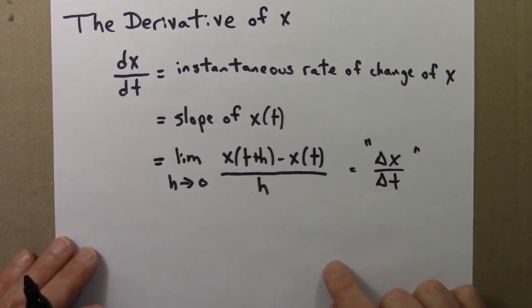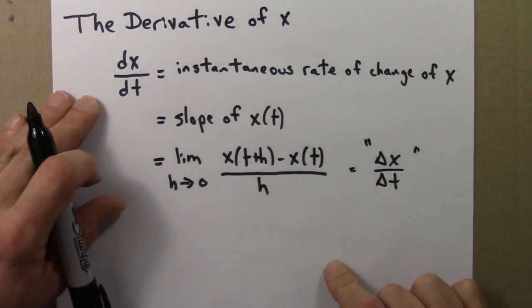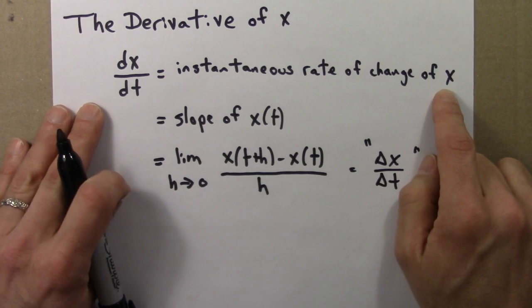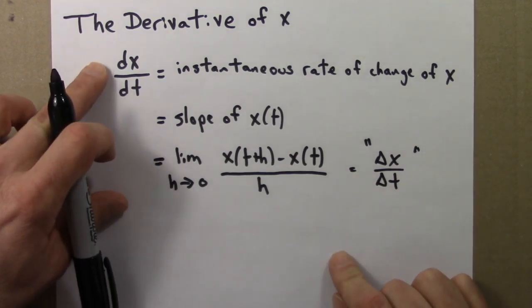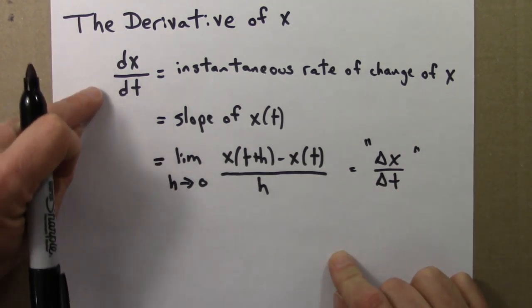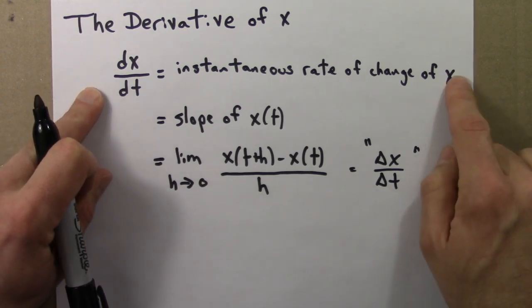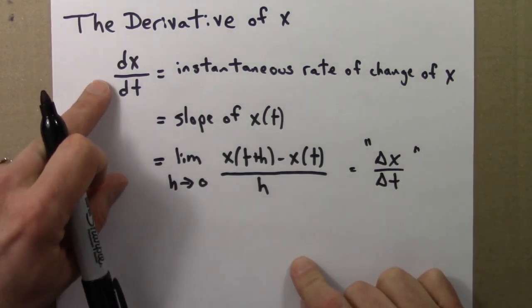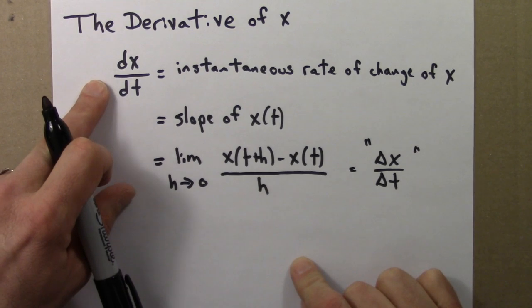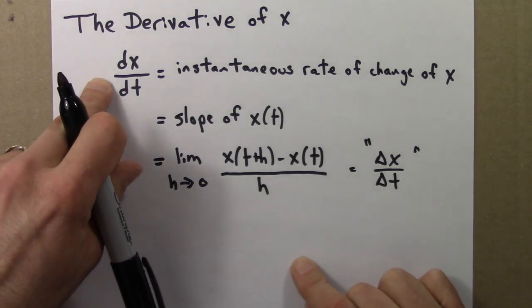So again, the derivative is the instantaneous rate of change of x. It's telling you how fast x is changing. And you might get different values depending on the time. So this allows for a function x that's growing at different rates at different times.